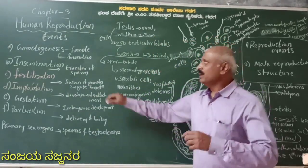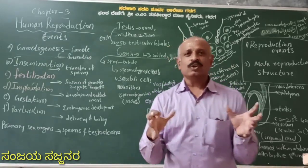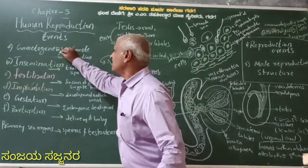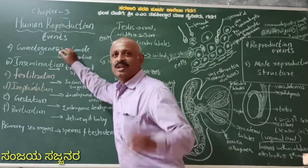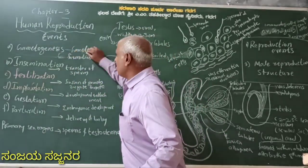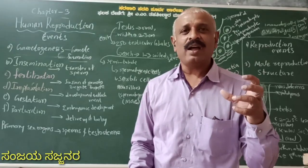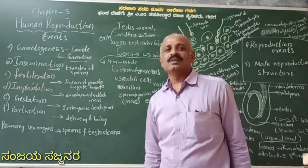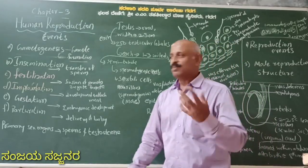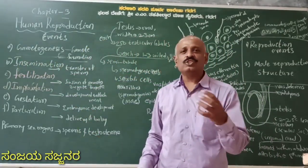The first event is gametogenesis. The gametes are of two kinds: the male gametes and the female gametes. It is a very simple start. We move to the next one, it is called gamete transfer — or egg separation.